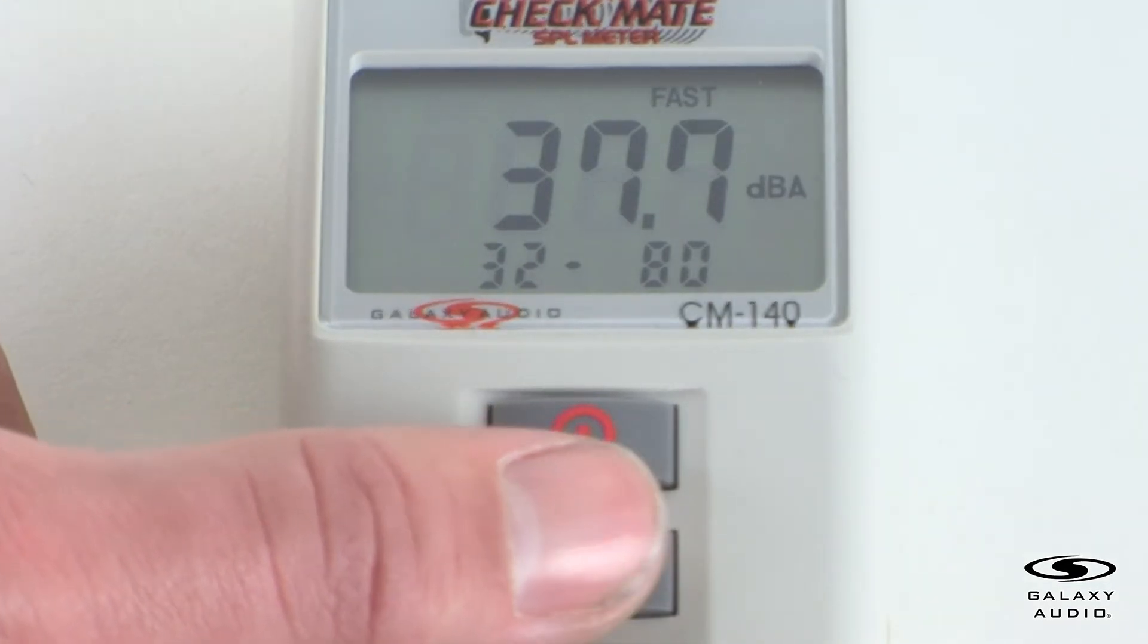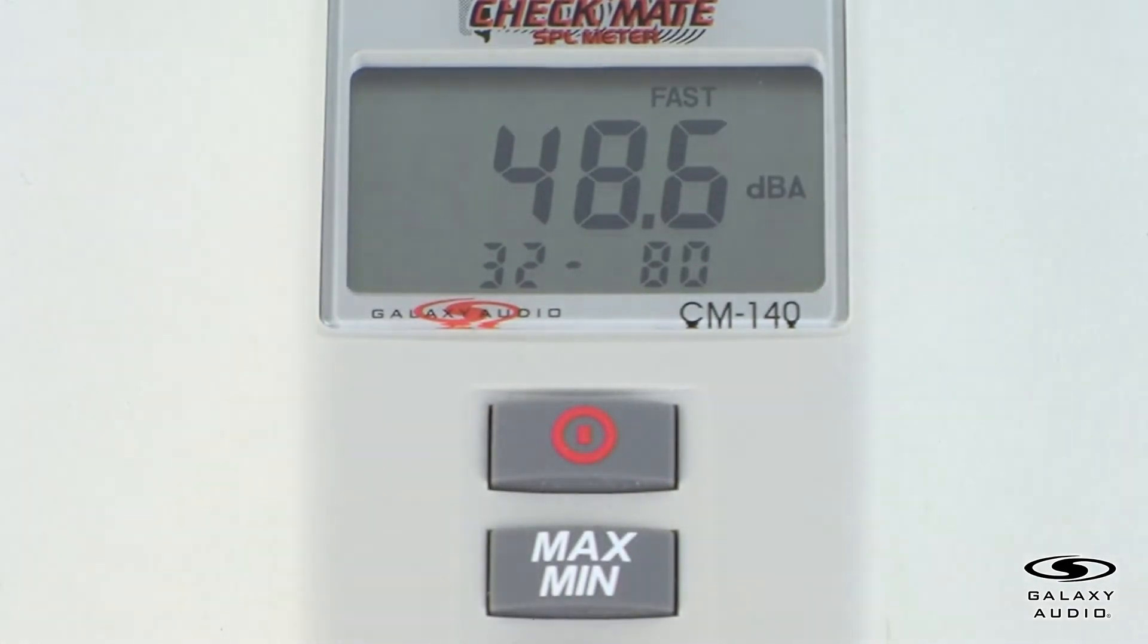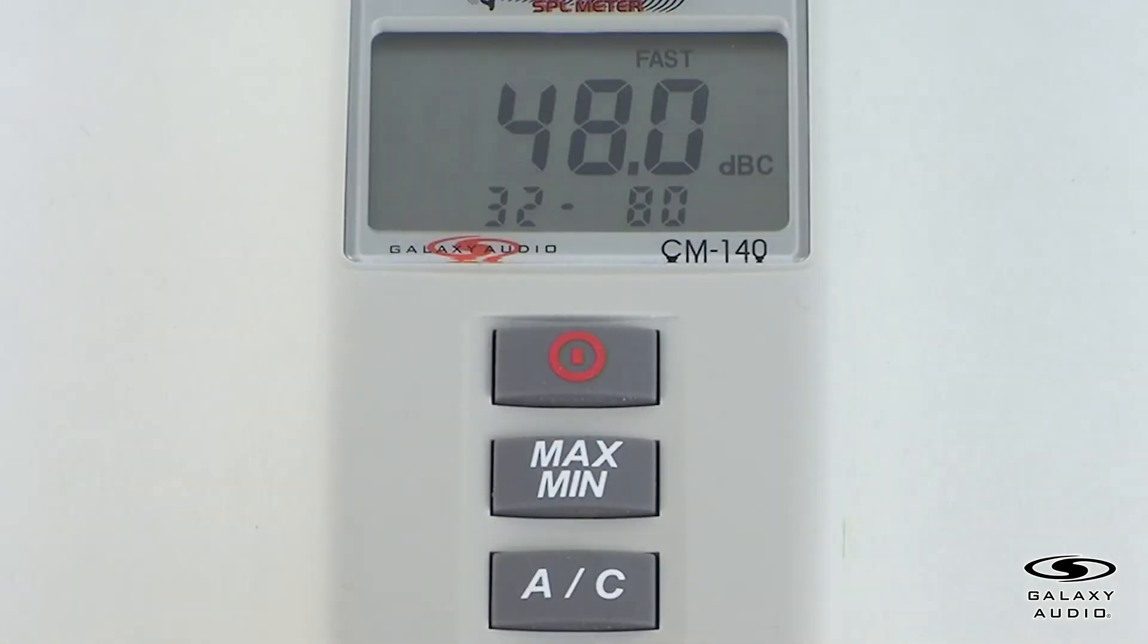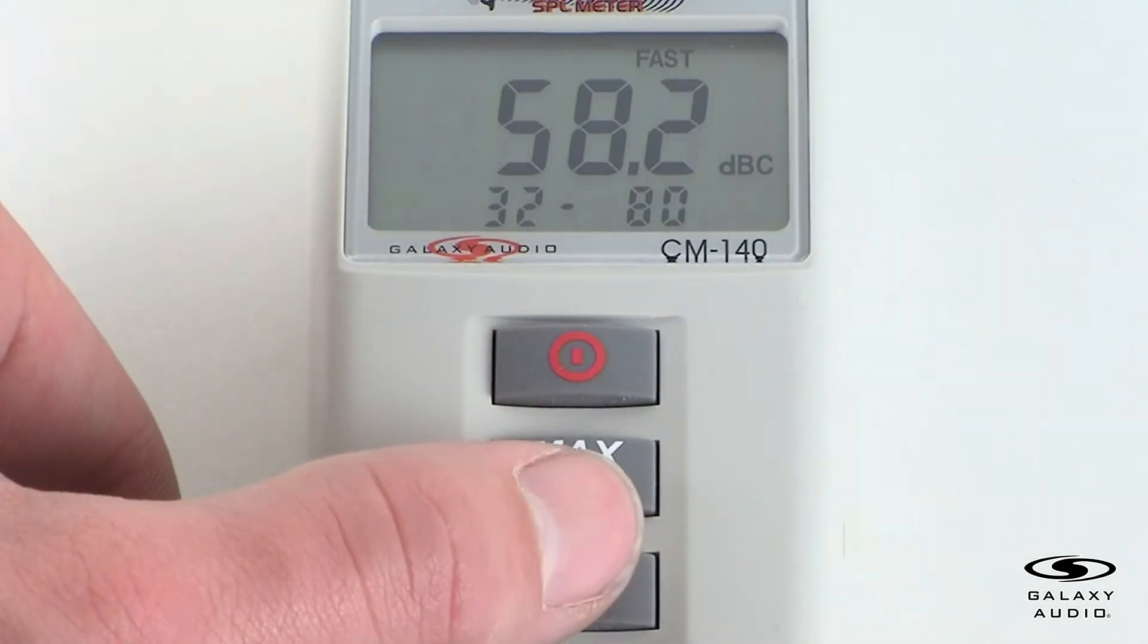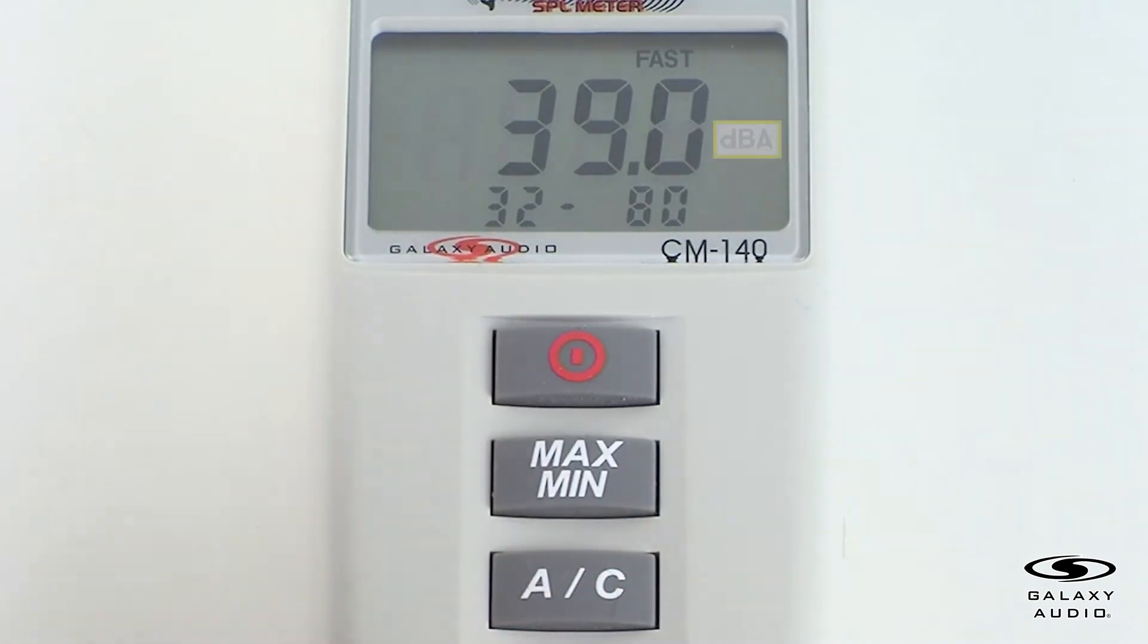If there is a change in the sound level range or the A/C weight, the max-min mode will clear. For the A/C frequency weighting select button, for general sound level measurements, use the A weighting setting.